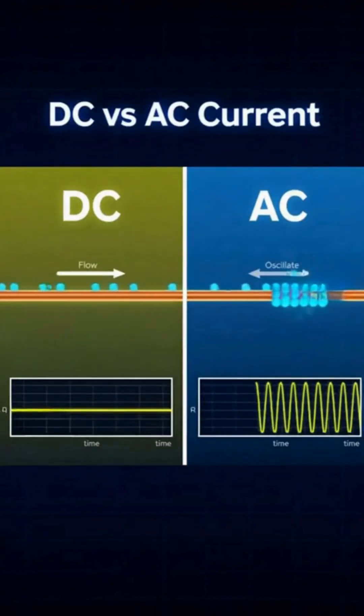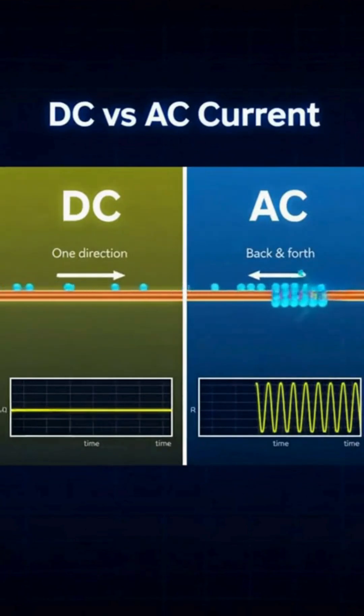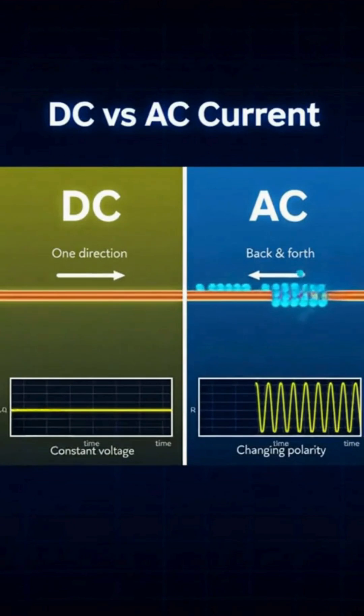In direct current, or DC, electrons flow in one steady direction. The result is a constant voltage, shown here as a flat line. In alternating current, or AC, electrons alternate direction.